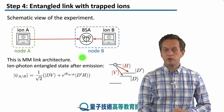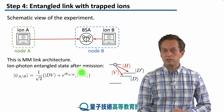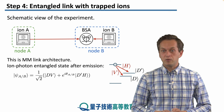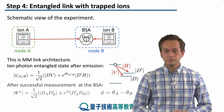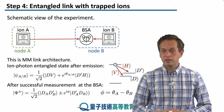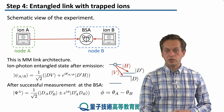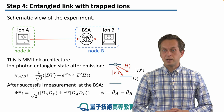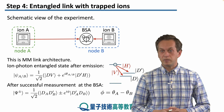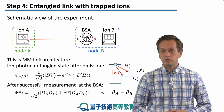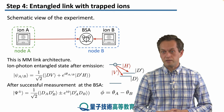On top of that, the experimentalists were able to control the relative phase between the two states, given by angles thetaA or thetaB. After a successful Bell state measurement at the BSA node, the state of the ions was projected onto either a psi-plus state or a psi-minus state, depending on the outcome at the BSA. The relative phase phi is simply the difference of the locally controlled relative phases thetaA and thetaB.